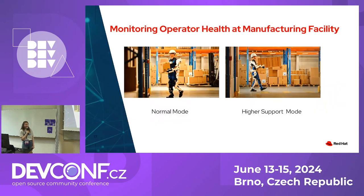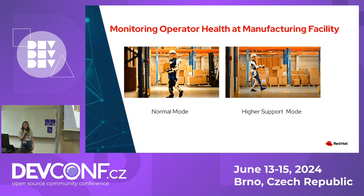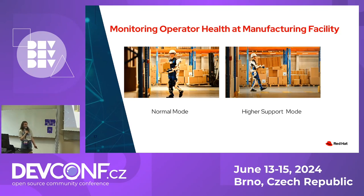In more detail, one use case involves using an exoskeleton to measure operator health at a manufacturing facility. An operator wears an exoskeleton and sensors to measure muscle fatigue. Once the fatigue exceeds a certain threshold, the exoskeleton kicks into a higher support state to offer relief to the worker, allowing them to carry out more work more safely. Once the fatigue returns to a safe level, the exoskeleton returns to a normal support state, allowing the worker to continue on.